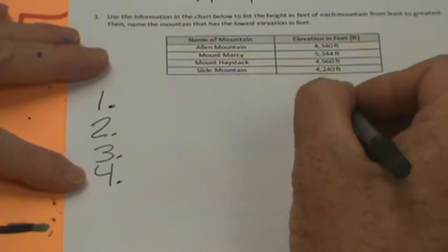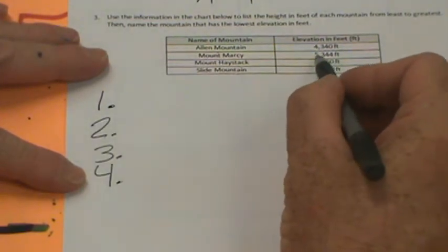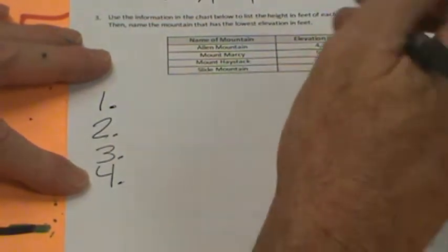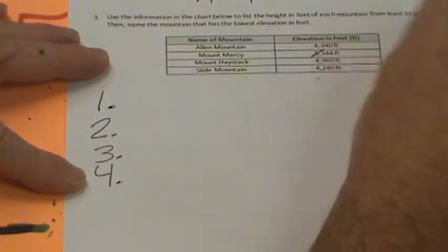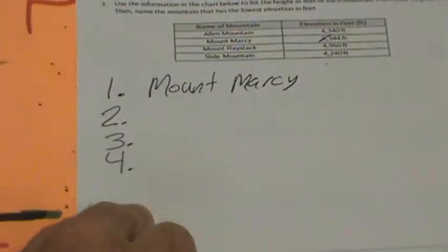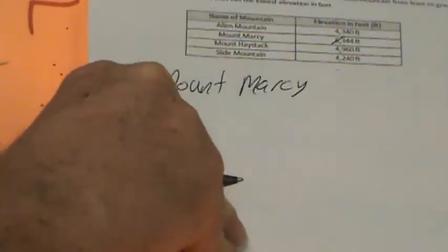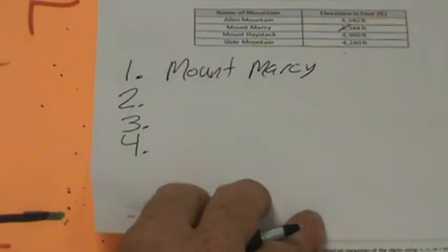Then name the mountain that has the lowest elevation. So try to find the highest mountain here. It's pretty easy right there. Look, there's a 5 in the thousands place. So we know that it's greater than all those 4s. So Mount Marcy is the highest. I want you to figure out the rest of the three, how they go in order. You can pause the video there because there's still another page of the problem set. Remember, you can always pause if you need to catch up.